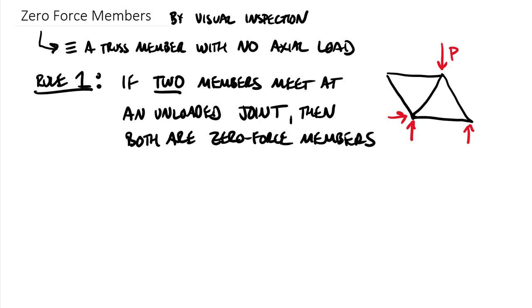And so taking a look at this truss and thinking about really the flow of forces right. We know that P is going to be split between this member here this member here. So those would be in compression and then this lower member here would need be in tension to hold this whole thing together. And so basically the two members over on the left don't have any need in this truss to have forces going through them.